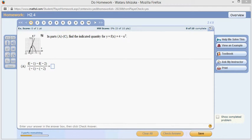All right, let's look at homework 2.4, problem number 1. So the function is f of x equals 4 minus x squared, and we want to find the following. This is basically a difference quotient here. Let's do that.